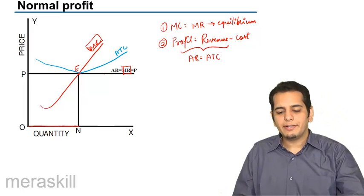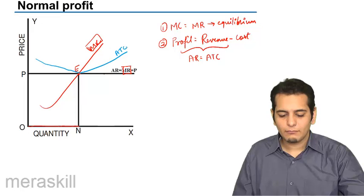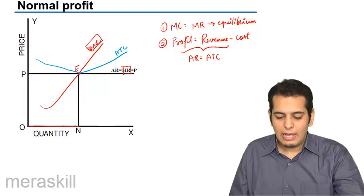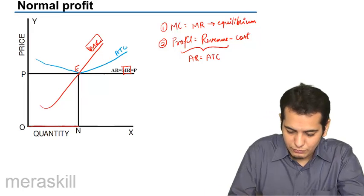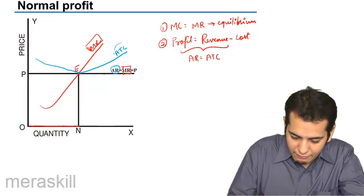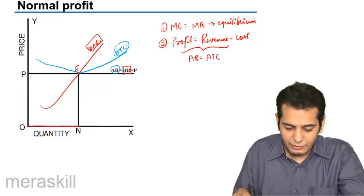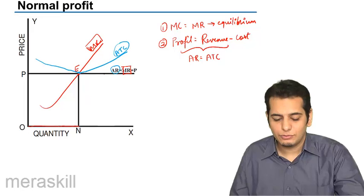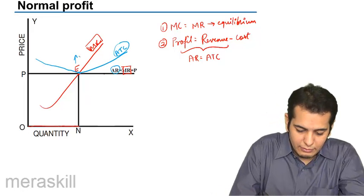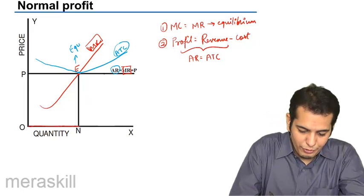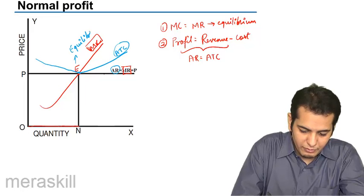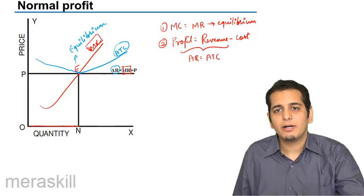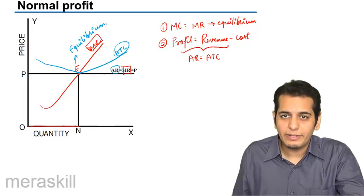This is ATC. Now you can see that average total revenue and average total cost are equal again at the point E. So point E as I said is the point of equilibrium. It is also the point where my AR is equal to ATC.